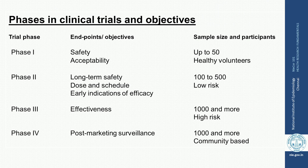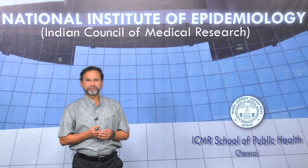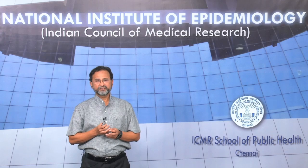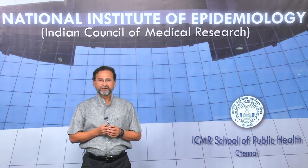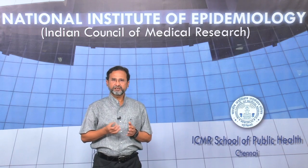Clinical trials are done in four phases. Phase one is the first step in clinical evaluation of any new intervention, done in a very small number of individuals — generally below 50 — who are mostly healthy volunteers. The goal is safety and acceptability evaluation. When found safe and acceptable, the product moves to phase two, done in a larger number — generally 100 to 500 individuals — who may have some low risk of a particular disease. Here we study long-term safety, dose and schedule, and early indications of efficacy.